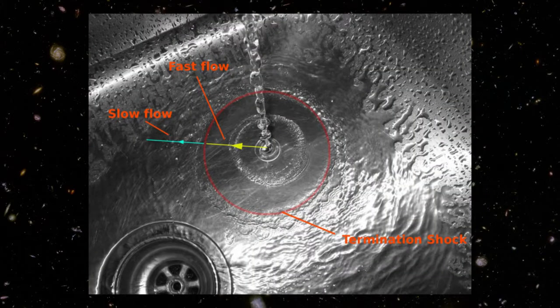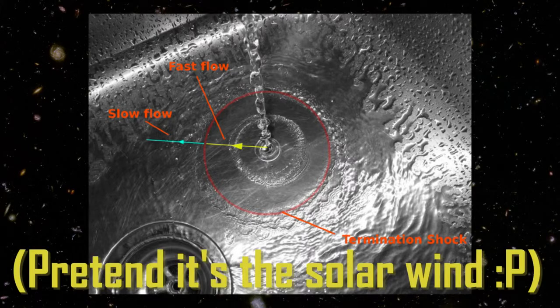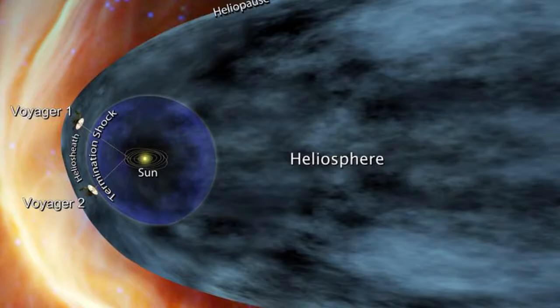It has since passed the termination shock, a region of the heliosphere where the solar wind reduces substantially, and since then entered the outer layer of our solar system, the heliosphere.